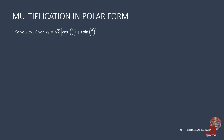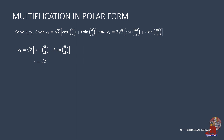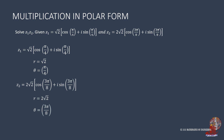The next example finds the product of z1 and z2, with z1 as root of 2 times cosine of pi over 4 plus i times sine of pi over 4. z2 is 2 root of 2 times cosine of 3 pi over 8 plus i sine of 3 pi over 8. From z1, r is root of 2 and theta is pi over 4. From z2, the modulus is 2 root of 2 and theta is 3 pi over 8.